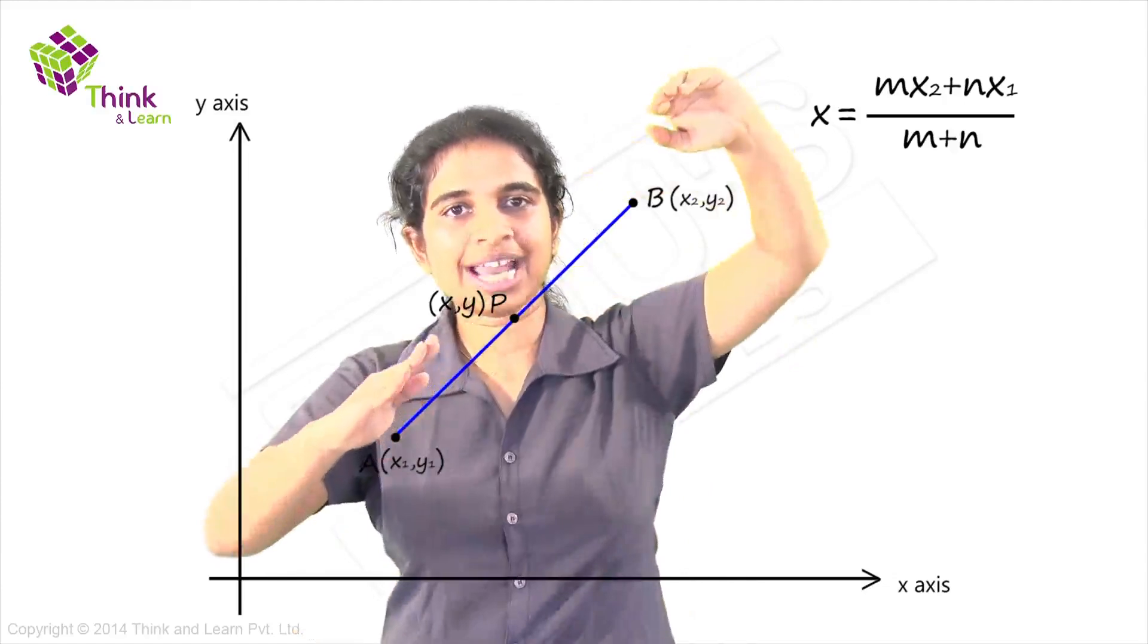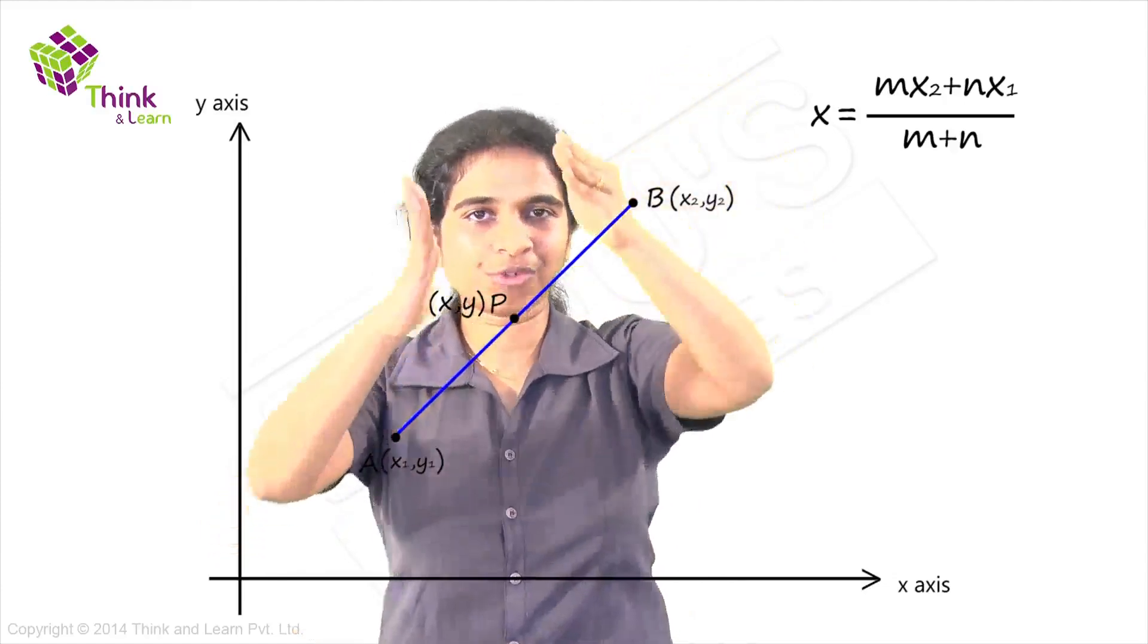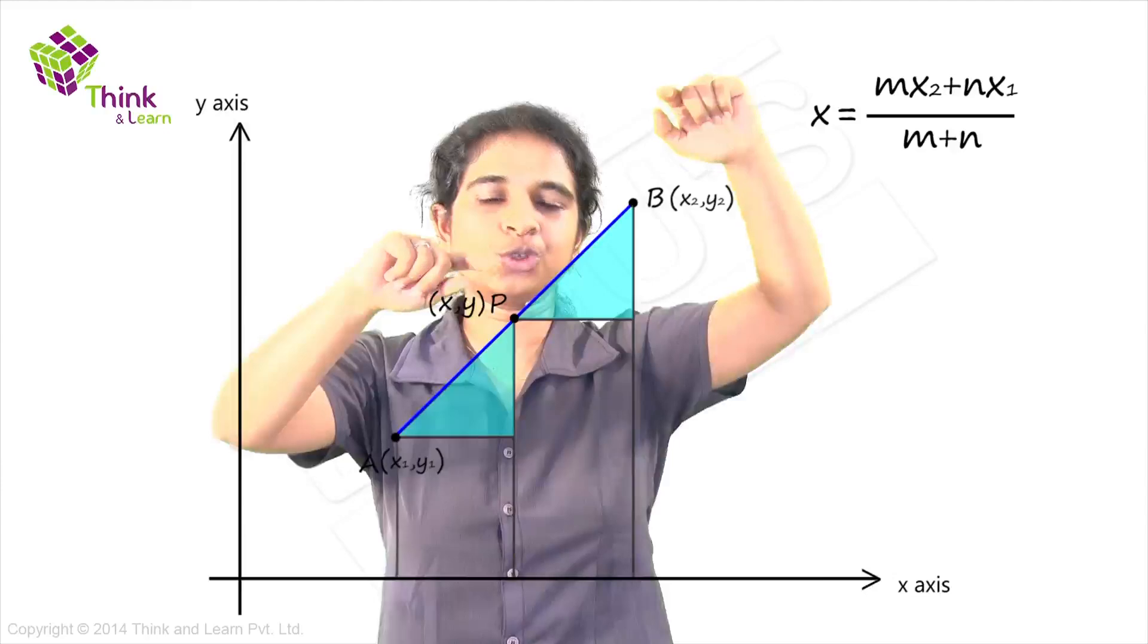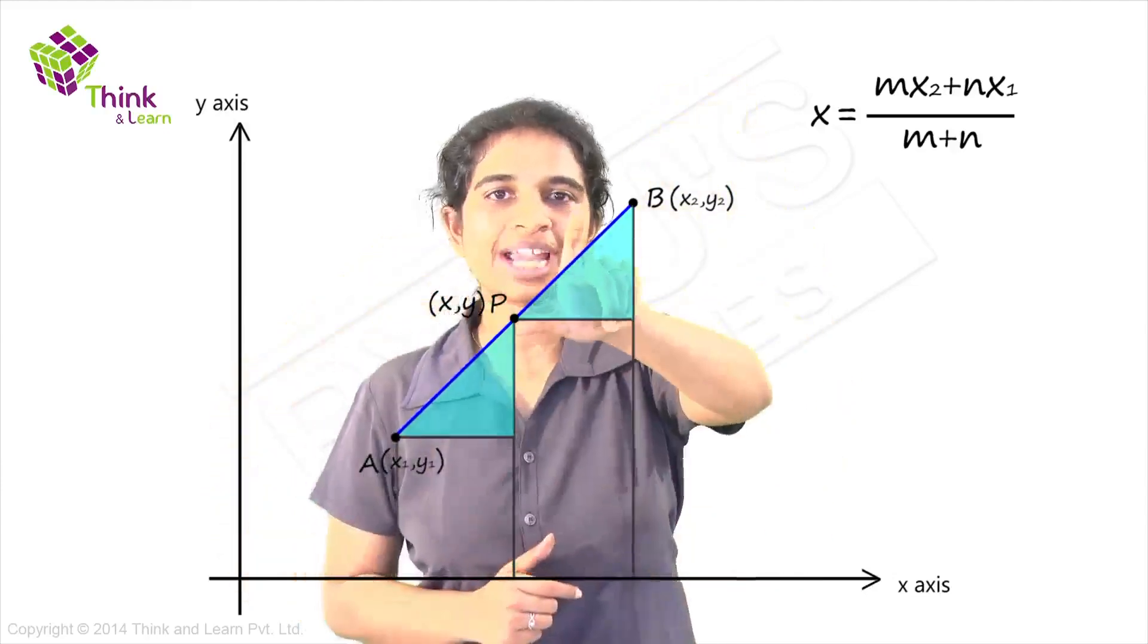You have one straight line. Earlier when we understood section formulae, we dropped perpendiculars and got these two triangles. These two triangles are similar.